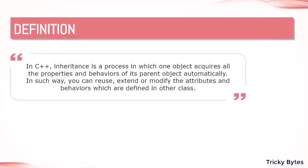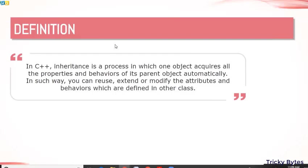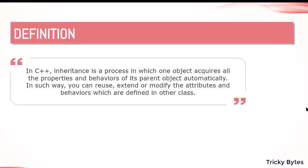The definition of inheritance in C++: inheritance is a process in which one object acquires all the properties and behaviors of its parent object automatically. In such a way, you can reuse, extend, or modify the attributes and behaviors which are defined in another class. Properties are data members and behaviors are the functions.